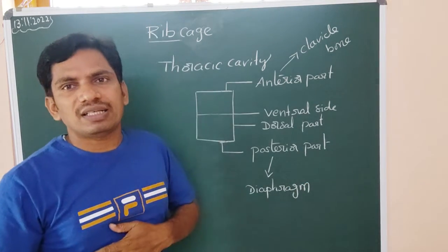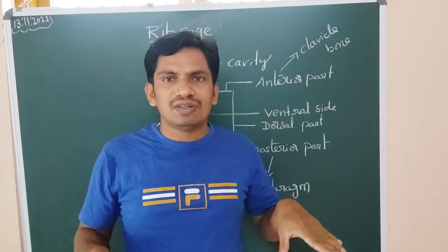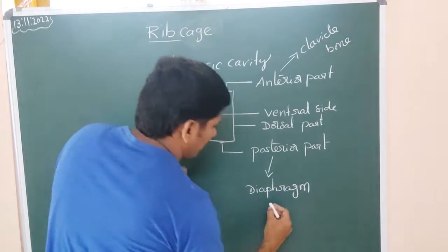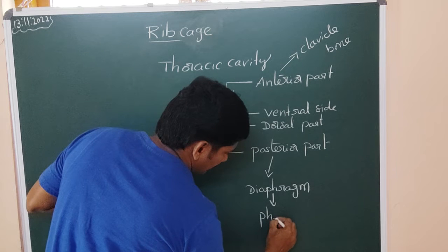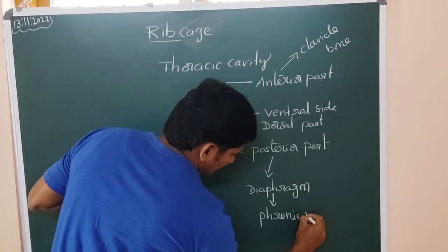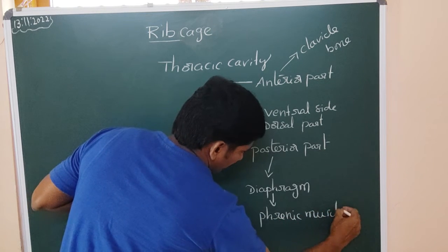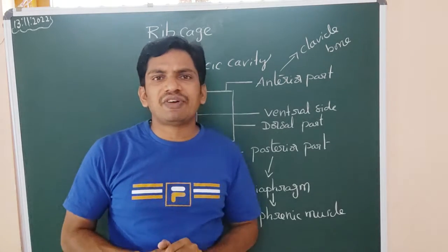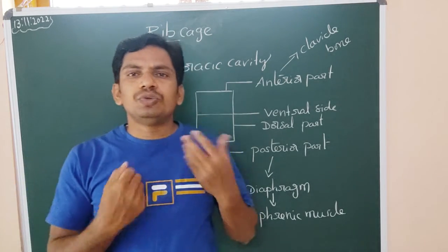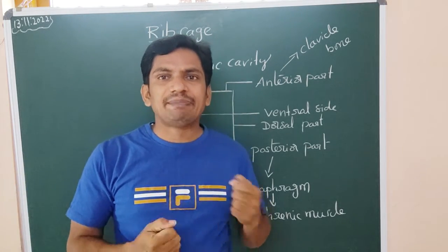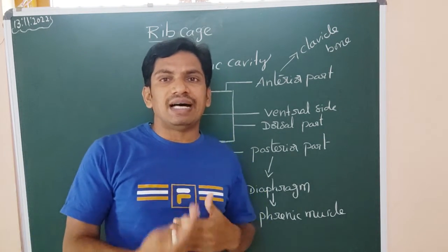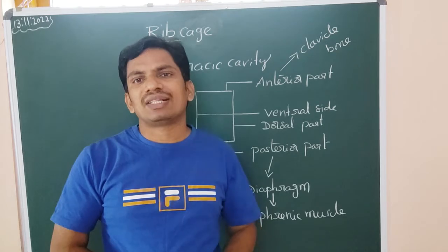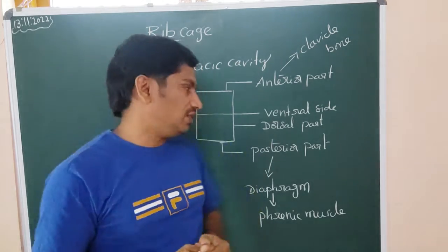Diaphragm is the posterior part, which acts as the floor. This diaphragm is made up of special type of muscles called as the phrenic muscles. These diaphragm contractions during the breathing, it plays a major role to increase the intrapulmonary volume based on the thoracic cavity volume.